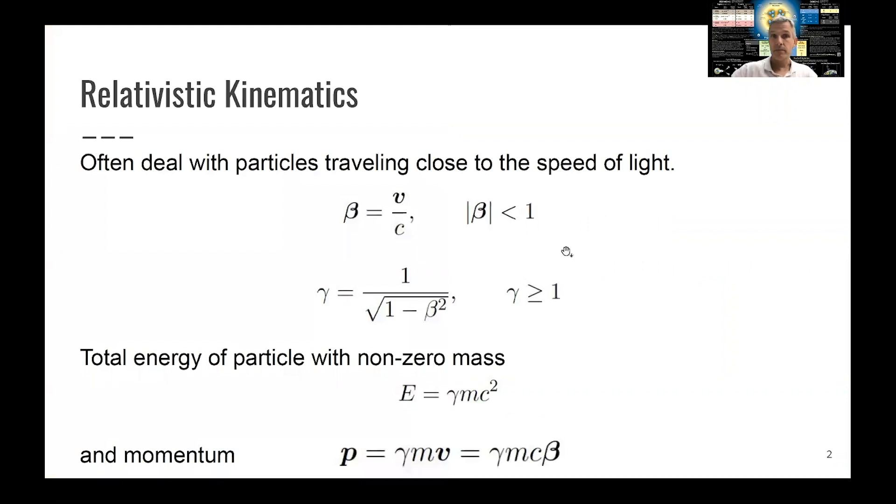So in particle physics, nuclear physics, we often deal with particles which travel close to the speed of light. The photon travels at the speed of light. We typically define the velocity as v over c. In natural units, beta is the velocity. Gamma is defined by 1 over square root 1 minus velocity squared. Beta is always smaller or equal to 1, smaller for massive particles. And gamma is always equal or greater than 1.